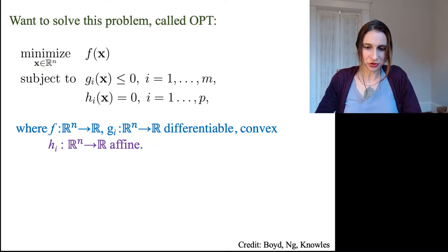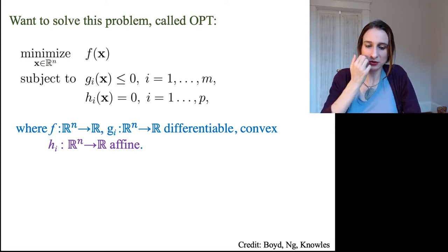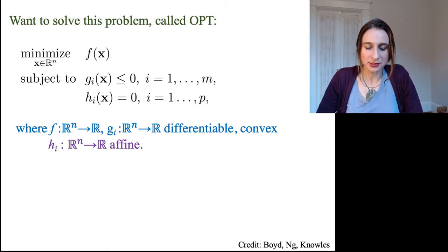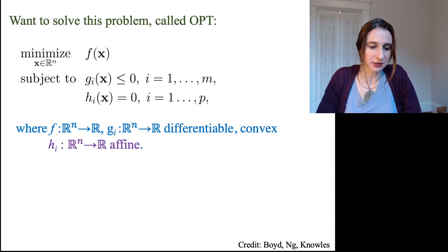The first pile of constraints are the g constraints, where the g's have to be less than or equal to 0, and g is differentiable and convex. Each one of the g's is differentiable and convex. And then the h's are all affine.